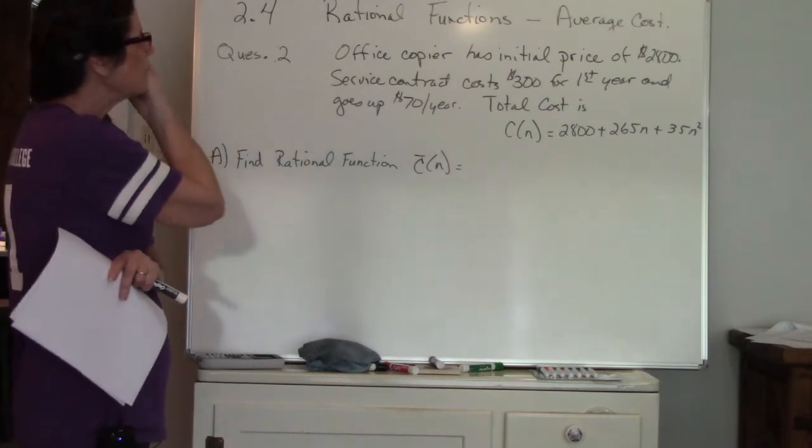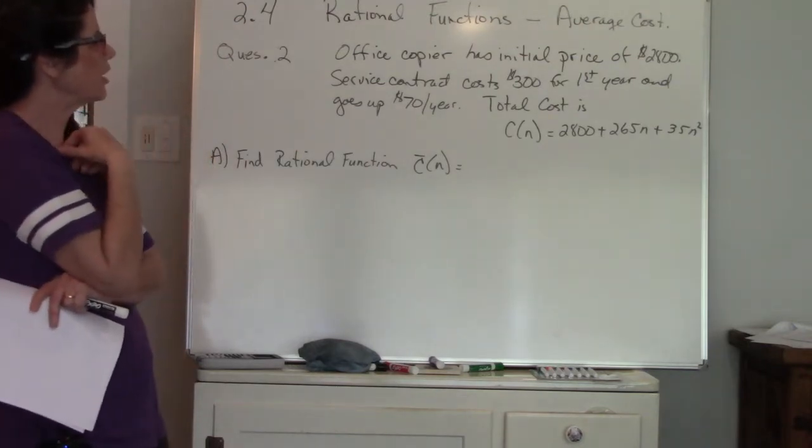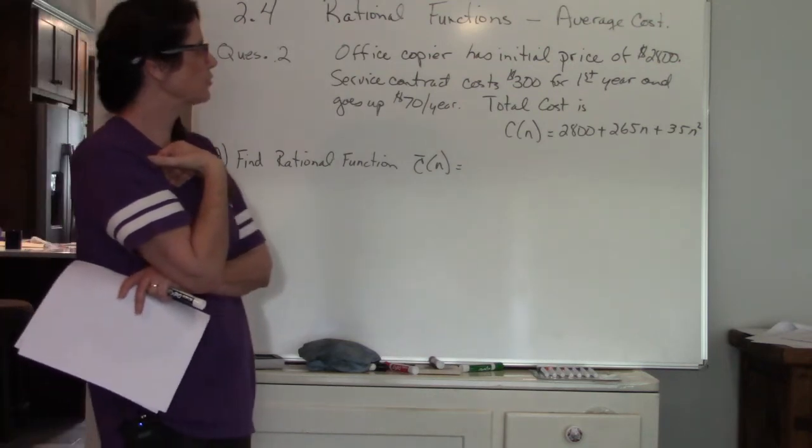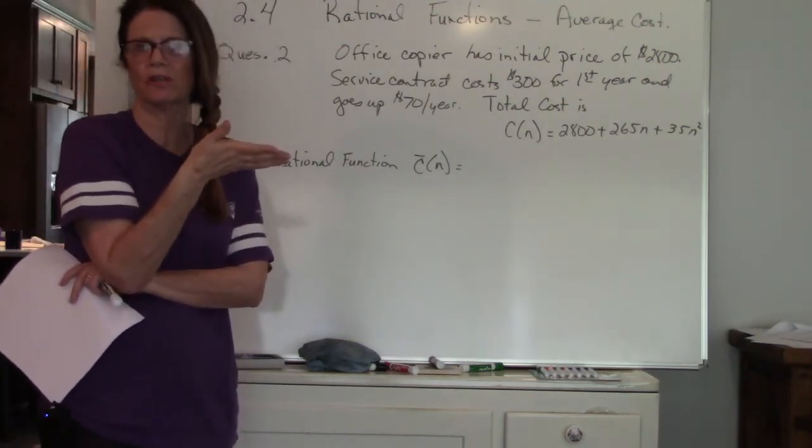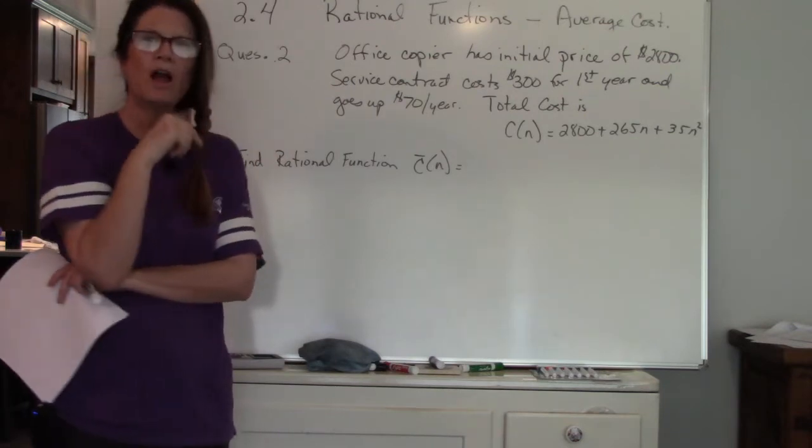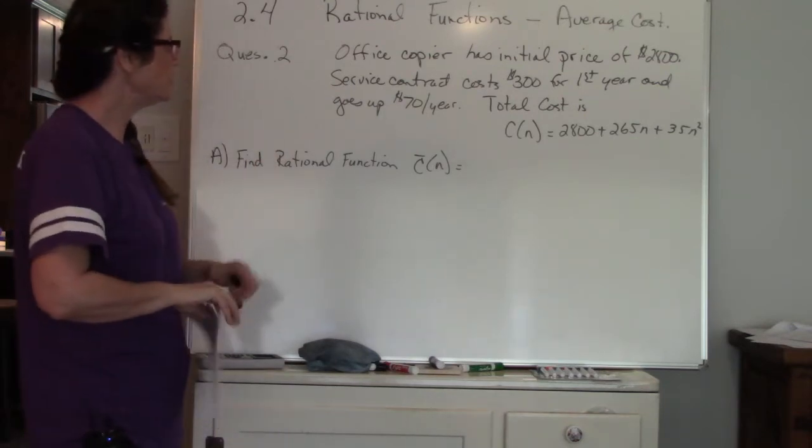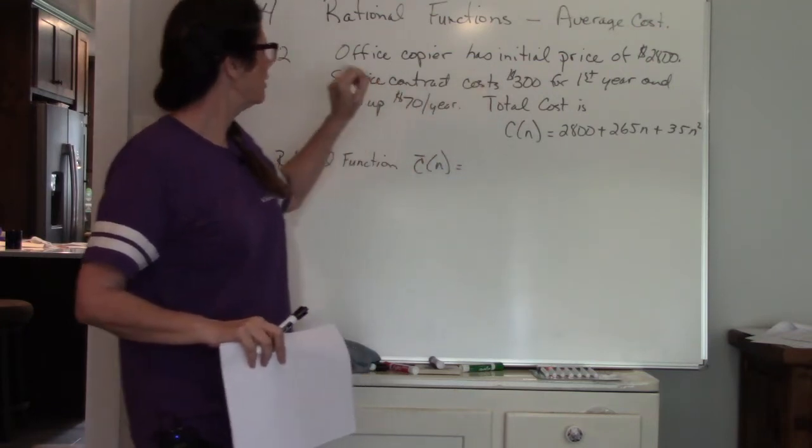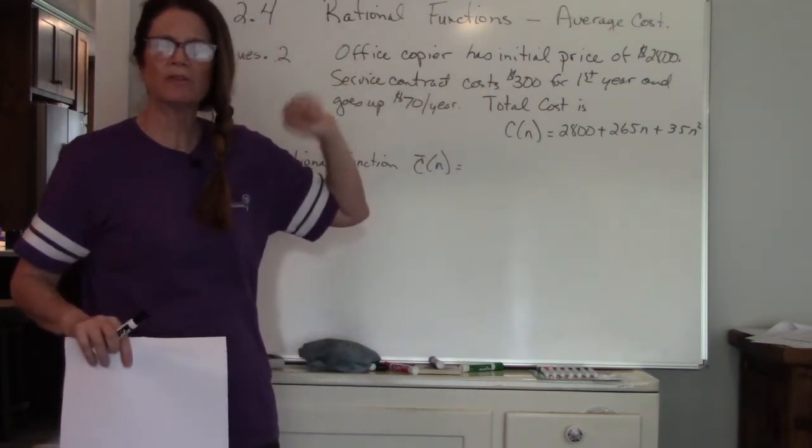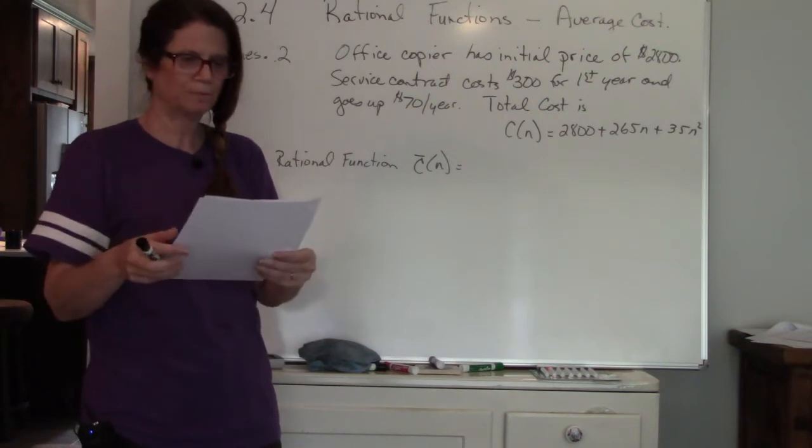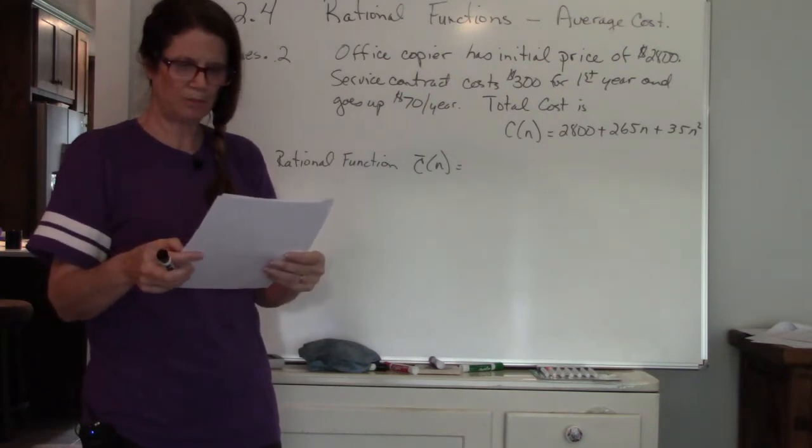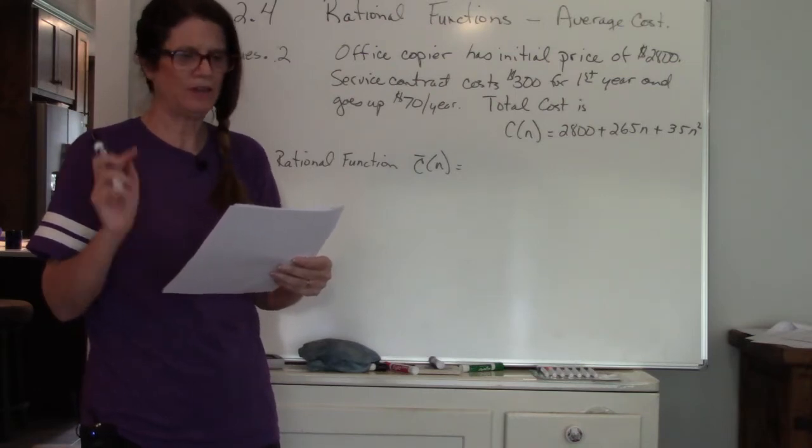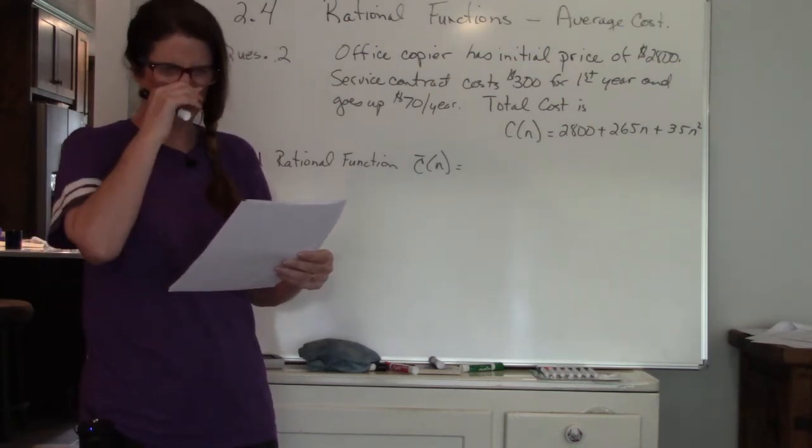Here's the example: office copier has initial price of $2,800. The service contract costs $300 for the first year and then goes up $70 for every year after that. The total cost is given to you. In this case we're using C of N and N represents the number of years that we're dealing with.